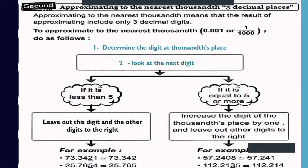But if the next digit equals five or more, increase the thousandths digit by one and leave out all digits to the right. Example: 57.2408 — the thousandths digit is 0, the next digit is 8, greater than 5, so increase 0 by 1 — approximately 57.241.